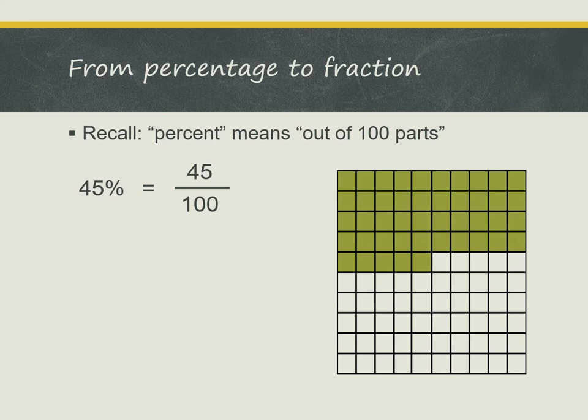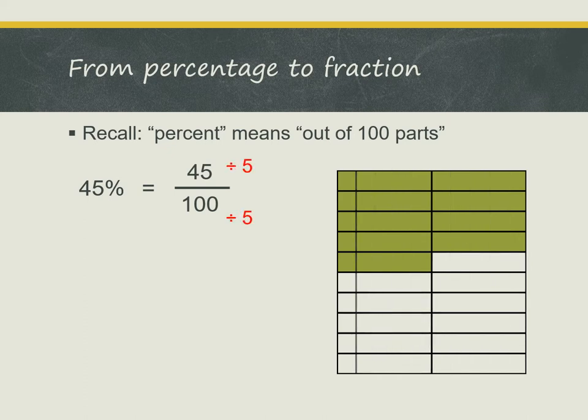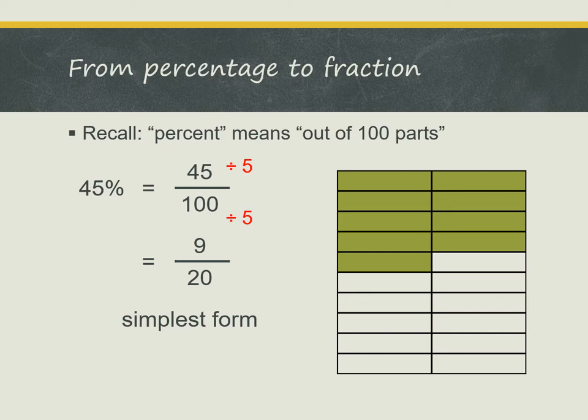And then we can simplify this fraction. I can divide the numerator and denominator by 5, and I get the fraction 9 out of 20. Check that the fraction is in its simplest form. So this fraction is in the simplest form, and we have the answer, 9 out of 20.